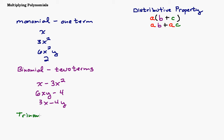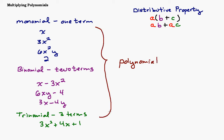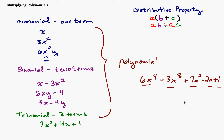A trinomial has three terms, like 3x squared plus 4x plus 1. If it's more than three terms we usually just call it a polynomial, although these are all types of polynomials: a polynomial of one term is a monomial, two terms is a binomial, three terms is a trinomial. Something like 6x to the fourth minus 3x to the third plus 7x squared minus 2x plus 1 has five terms — we just call that a polynomial.